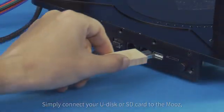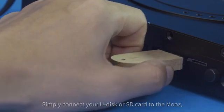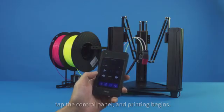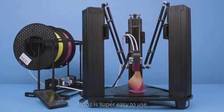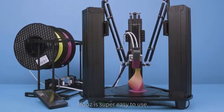Simply connect your U-Disc or SD card to the Moos. Tap the control panel and printing begins. Moos is super easy to use.